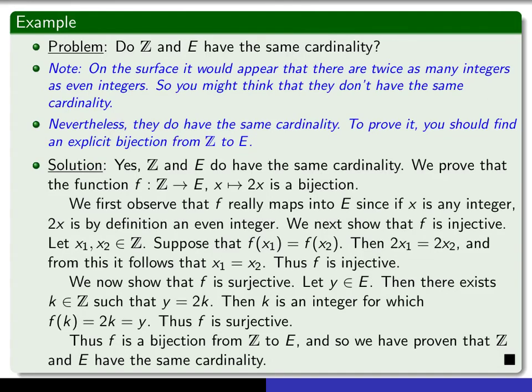So, here's my solution. I say, yes, Z and E do have the same cardinality, and we're going to prove that the function f that maps Z to E by x goes to 2x is a bijection. So, you really have to do three things. You first have to prove that it maps Z into E. And that's because if x is any integer, then by definition, 2 times x is an even integer.